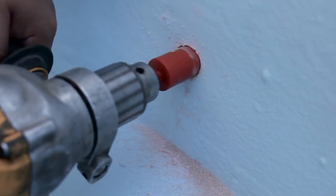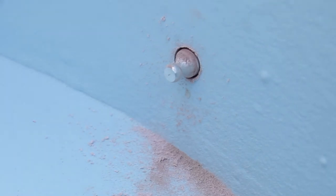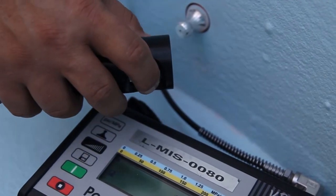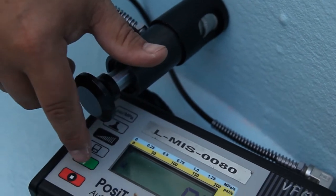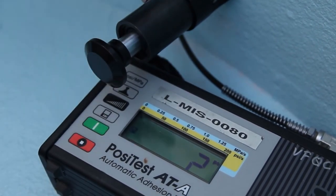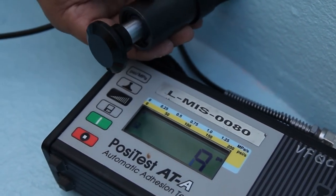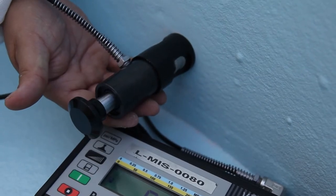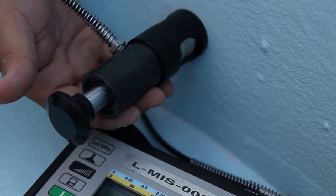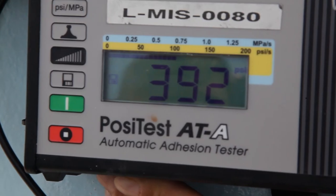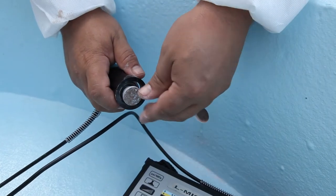Care should be taken to prevent the drill bit from breaking the dolly free of the coating. Place the puller over the dolly and hold it in place. This may require a second person to operate the unit and record the reading. The tester will apply pulling pressure to the dolly, breaking it free from the substrate. When the dolly and coating have broken free of the substrate, record the pressure reading and remove the dolly.